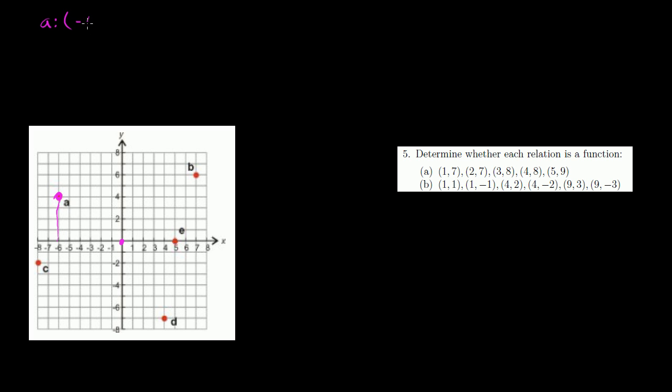So point A is at negative 6 for the x-coordinate. And then its y-coordinate, which is how high it is, is 4. So point A is at the coordinate negative 6, 4.